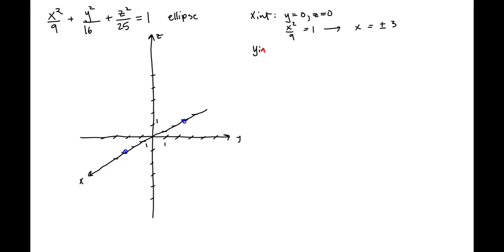Similarly, for the y-intercept, we're going to set x equals 0 and z equals 0. In doing that, we get the equation y squared over 16 is equal to 1. Solving for y, we get y equals plus or minus 4. Here is y equals plus 4. Here is y equals minus 4.